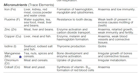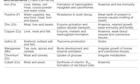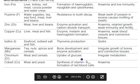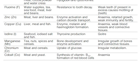Manganese, found in tea, nuts, spices, and cereals, is important for bone development and enzyme activation; deficiency causes irregular growth of bones and connective tissues. Chromium, from meat and cereals, is important for glucose uptake; deficiency causes irregular metabolism. Cobalt, found in meat and yeast, is important for synthesis of vitamin B12 and formation of red blood cells; deficiency causes anemia.